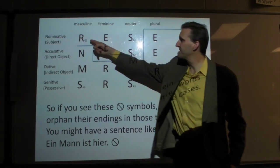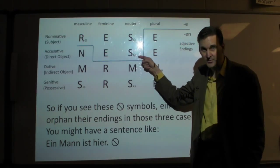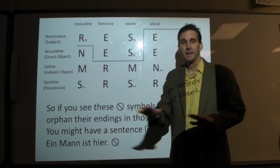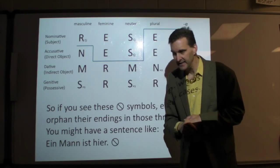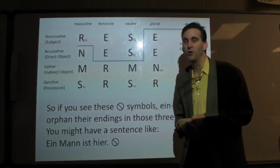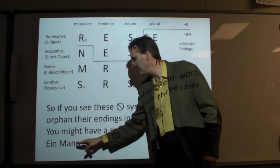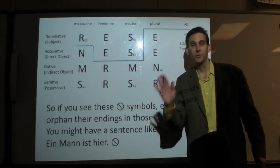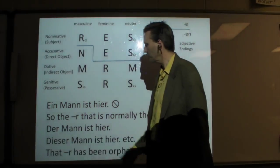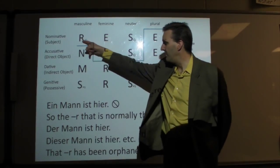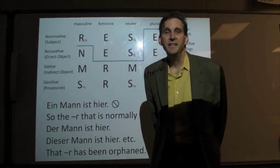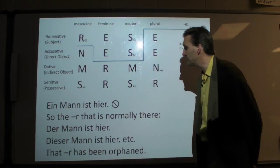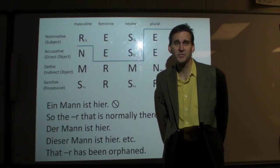So remember these symbols here, here, and here, which you've already written out? Those mean that the normal endings, the normal R and the S and the S were orphaned by those darn Ein words. They orphaned those little endings. Just like this sentence, Ein Mann ist hier. We don't say Ein-er Mann ist hier. We just say Ein, no R. But if we orphaned that R, I want you to know something. The adjectives happen to be the most generous words on planet German. Adjectives want to adopt any orphaned endings. They're just that way.